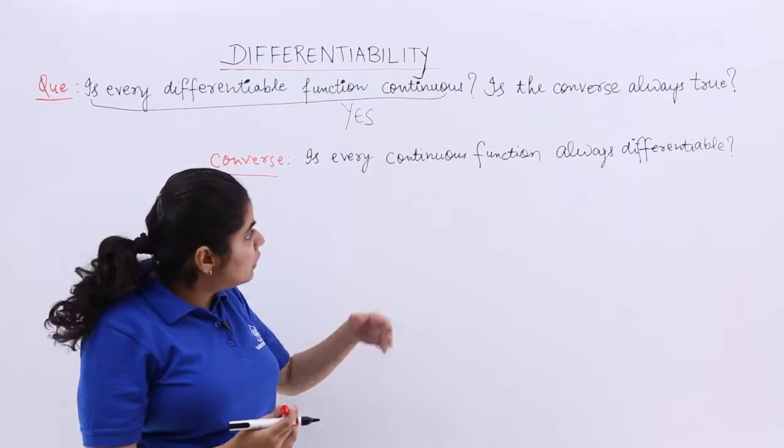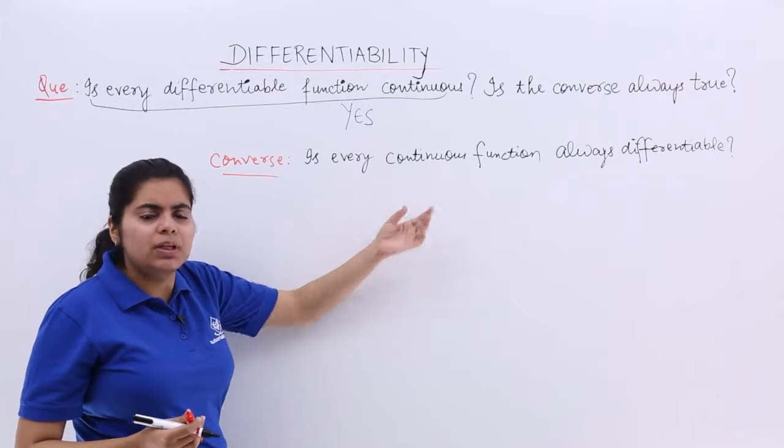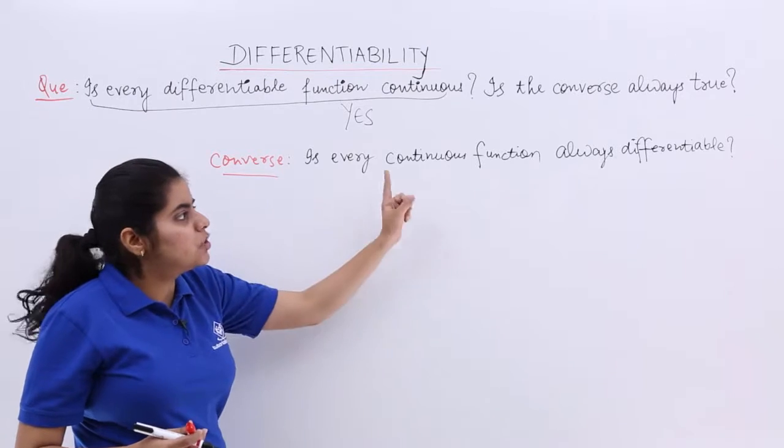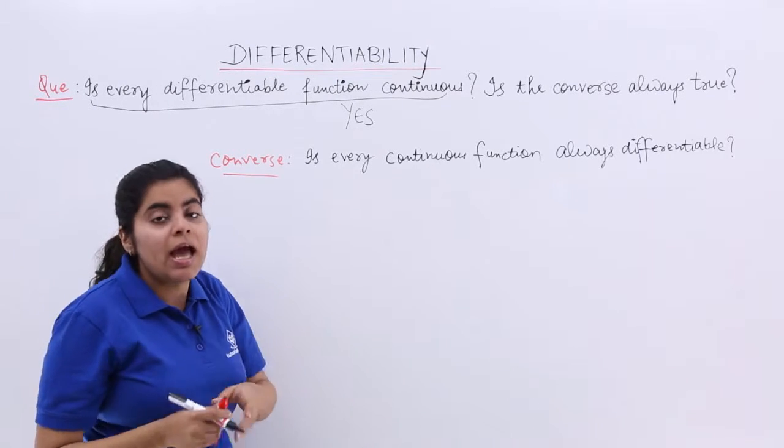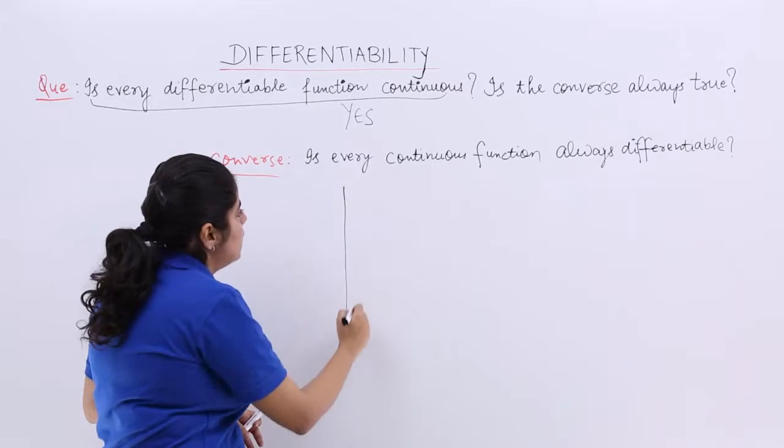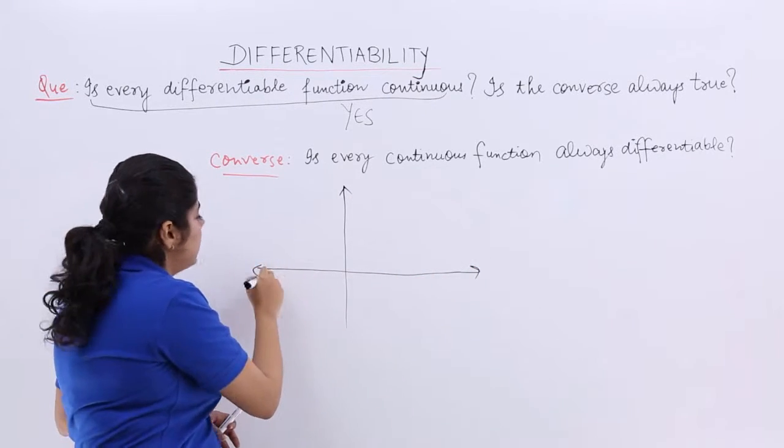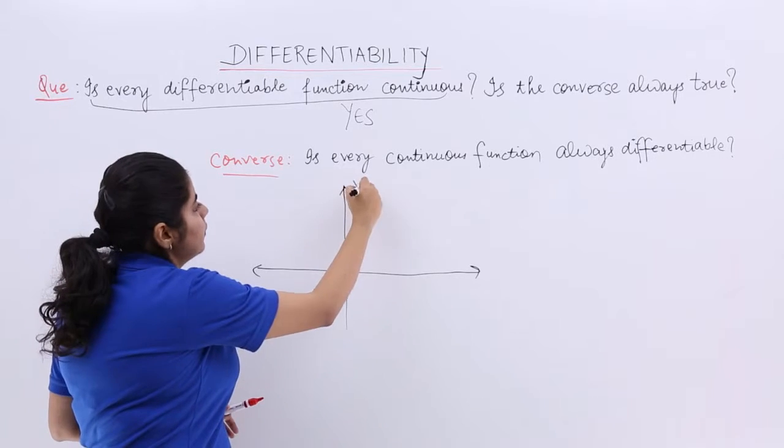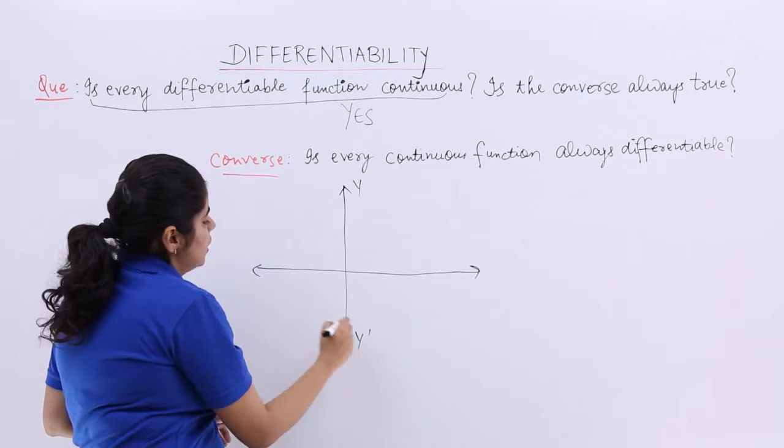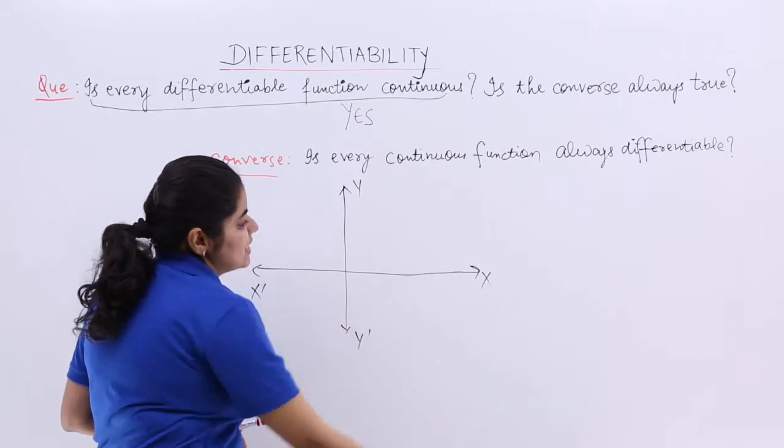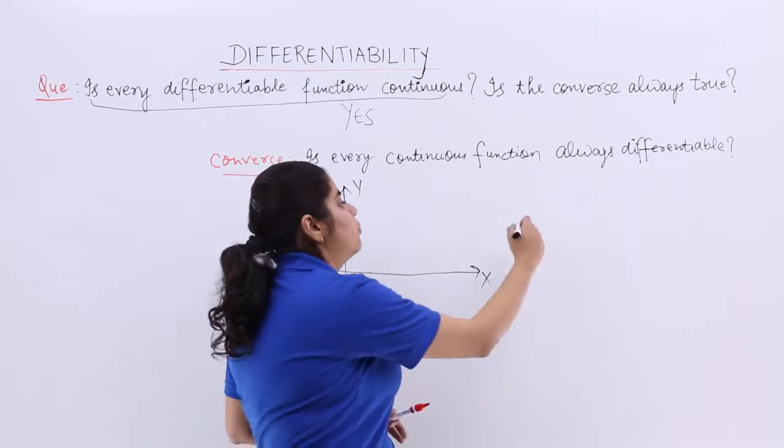So even if you cite an example of one function which does not satisfy this, it will become false. And I have one very easy function for you which we have already studied in many videos earlier - it is the study of mod function.